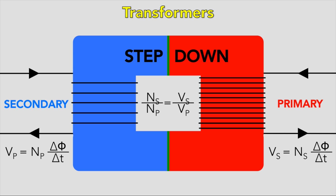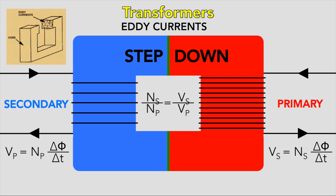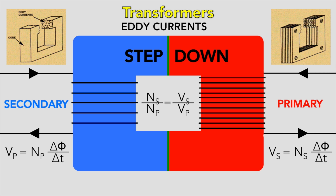If a transformer were 100% efficient, the power in would equal the power out. However, there will always be power lost through heat, usually as a result of eddy currents in continuous cores due to the continuously changing flux and induced EMF. One way to reduce this is through lamination so the current can't flow. Heat is also generated by resistance, so using low-resistance wires like thick copper will give a smaller resistance. Energy is also needed to magnetise and demagnetise the cores; using a soft material that magnetises and demagnetises very easily will reduce this effect.